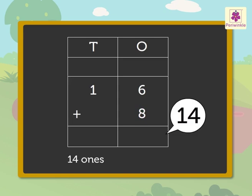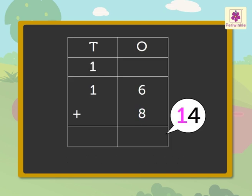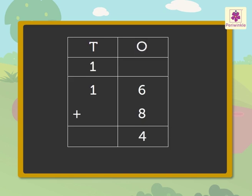Regroup fourteen to get one-ten and four ones. Carry one-ten to the tens column and write four in the ones column. Now, add the tens, that is, one plus one is equal to two. Thus, sixteen plus eight is equal to twenty-four. There are twenty-four animals in all.